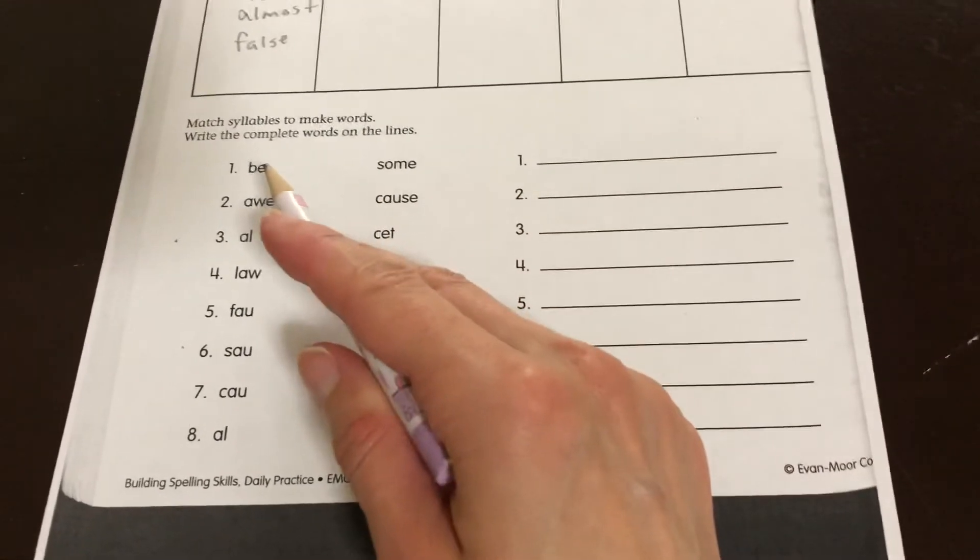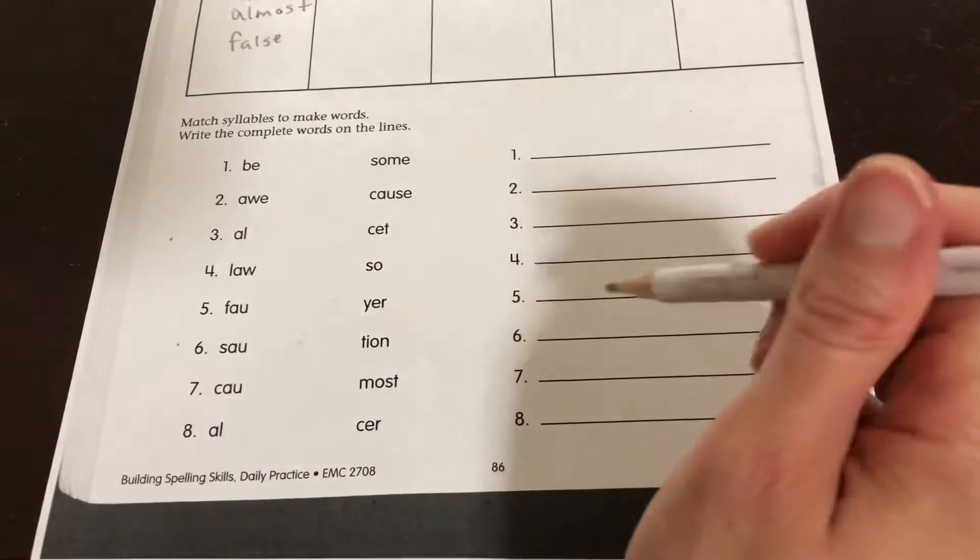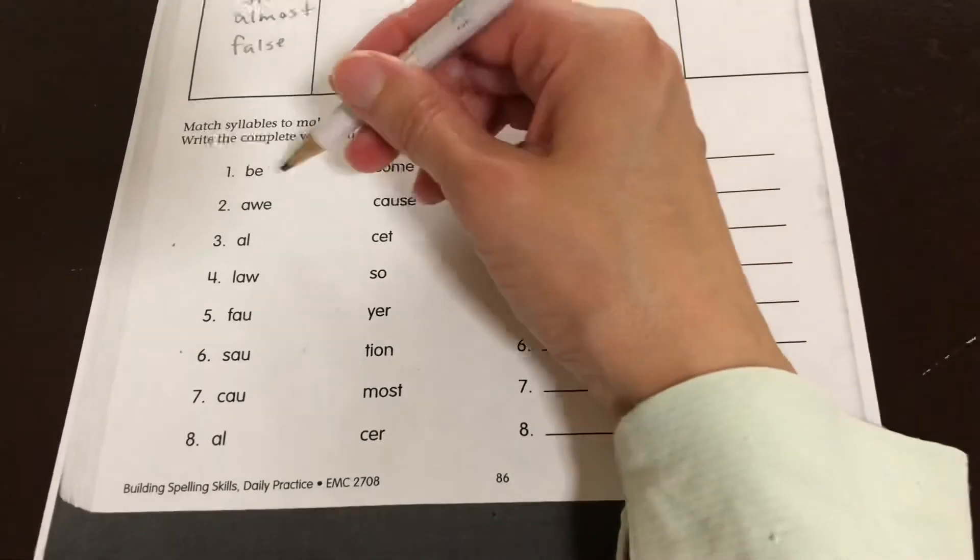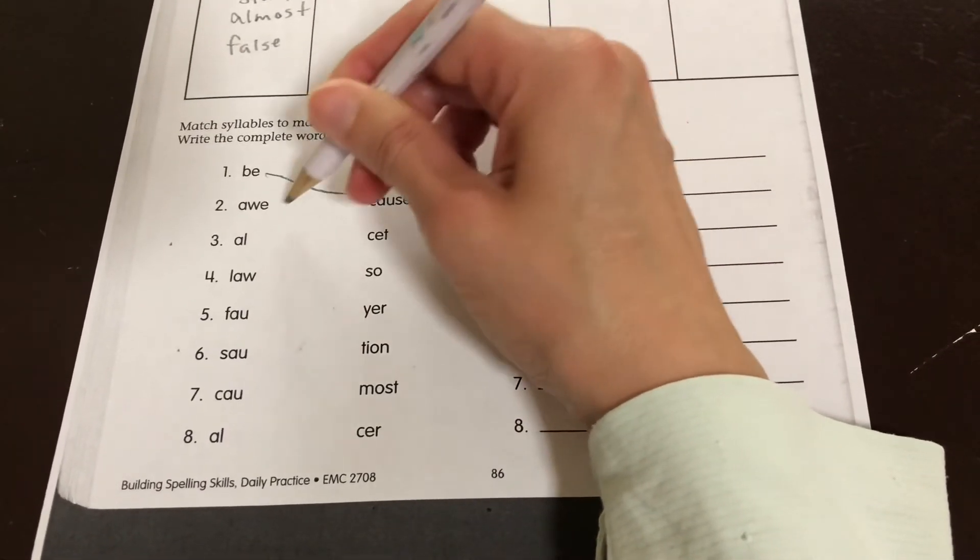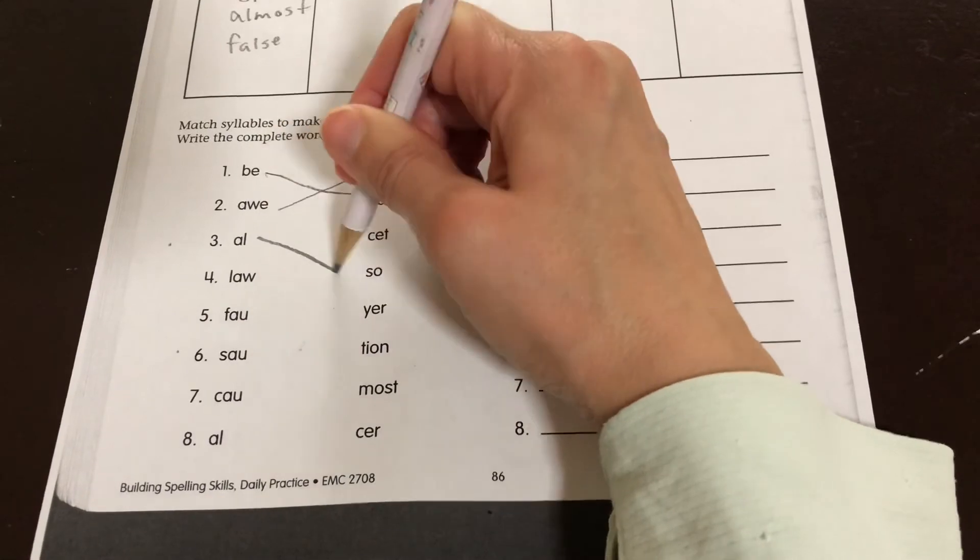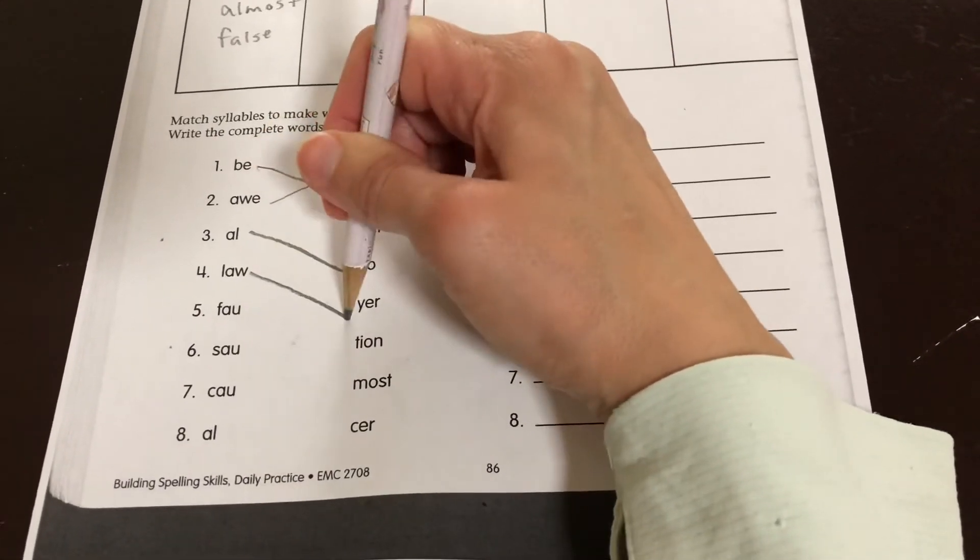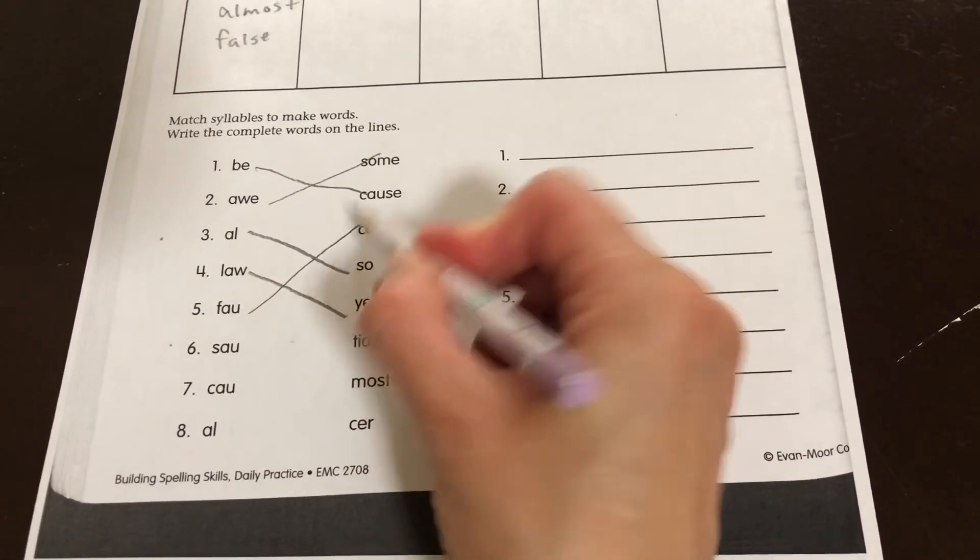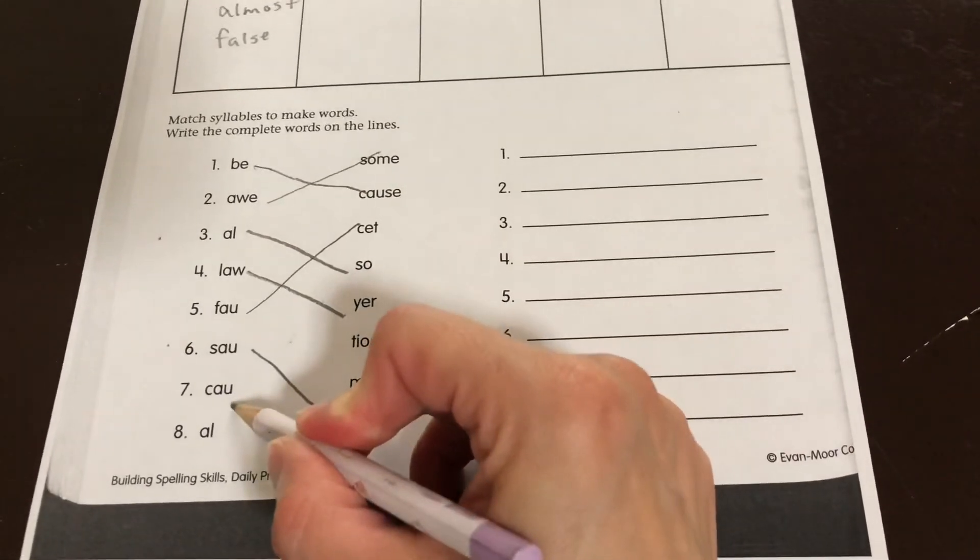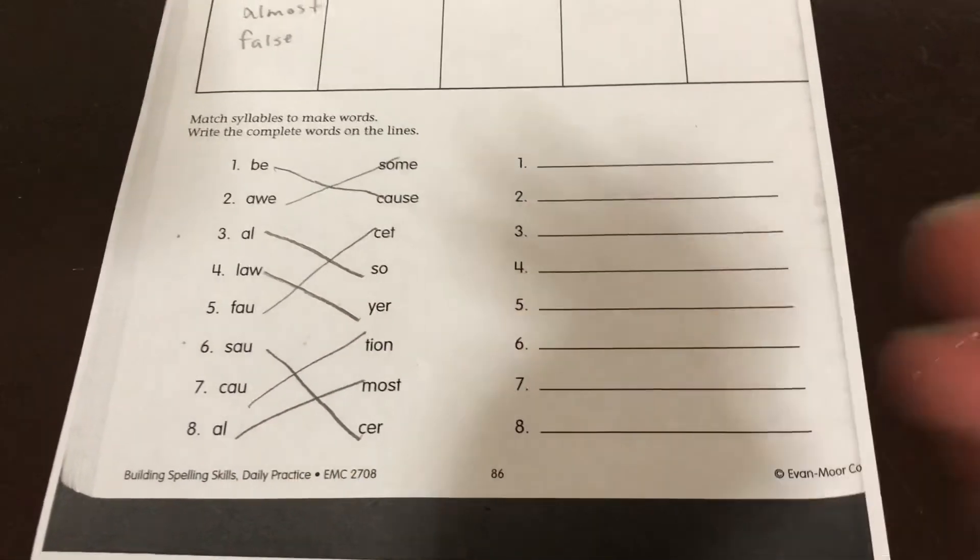All right, this one should be easier. I'm not going to write the words out. I want you to write the words out, but you need to match them up. So we have because, awesome, also, lawyer, faucet, saucer, caution, almost.